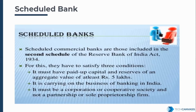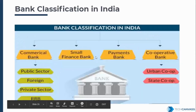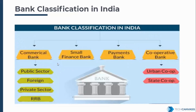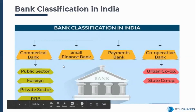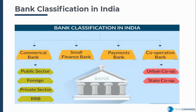Scheduled banks are further subdivided into commercial banks and cooperative banks. Under commercial banks, we have public sector banks, foreign banks, private sector banks, and Regional Rural Banks (RRB). Cooperative banks are further divided into urban cooperative banks and state cooperative banks.